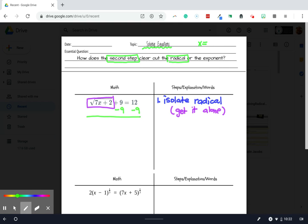Because then my radical, 7x plus 2, is alone on its side of the equation.